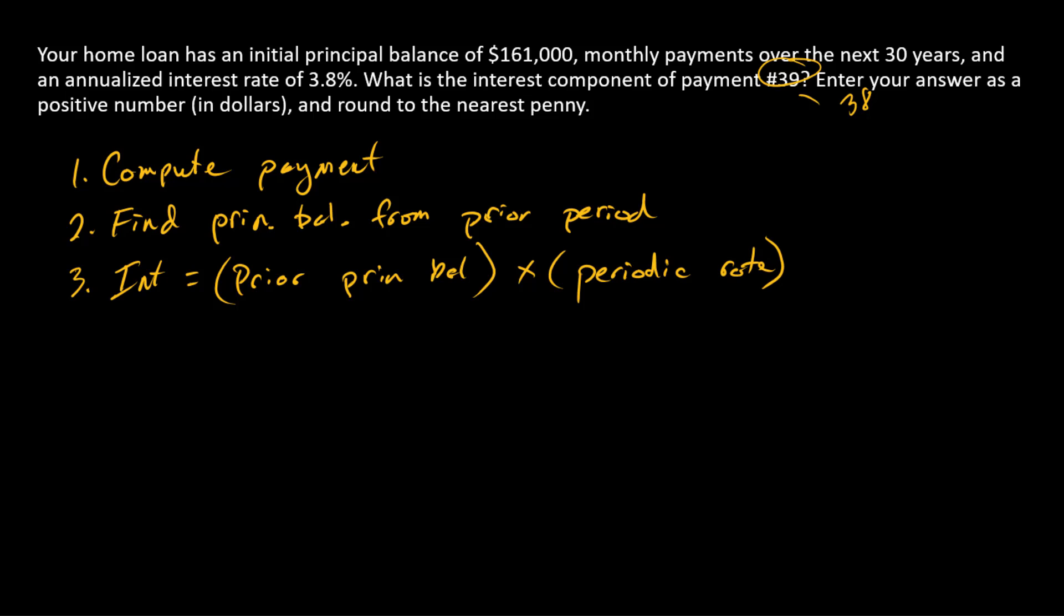I'm not going to go through all of these calculations because I've got other videos that do these. So if you'll follow those instructions, you can get to a payment here of $750.1913. So that's the payment amount for this loan. That's step one, we're done.